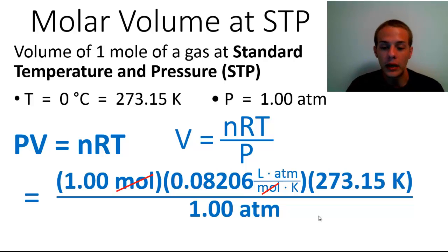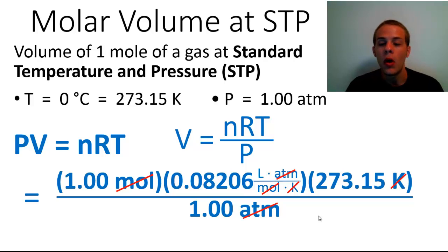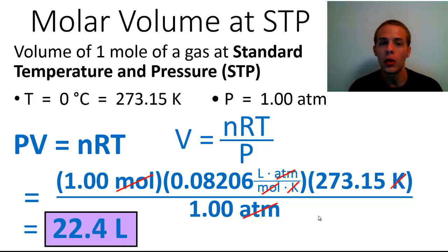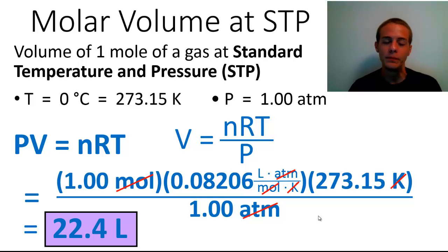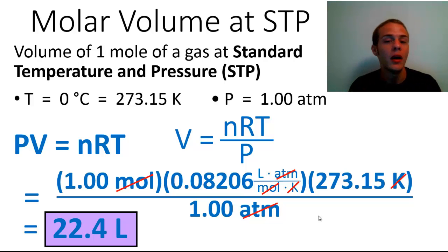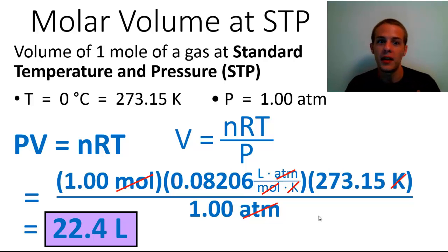The moles, atmospheres, and kelvins all cancel, leaving only liters. This turns out to be 22.4 liters. What's interesting is that it doesn't matter which gas it is — hydrogen, helium, methane — as long as you have one mole at standard temperature and pressure, it will occupy a volume of 22.4 liters.